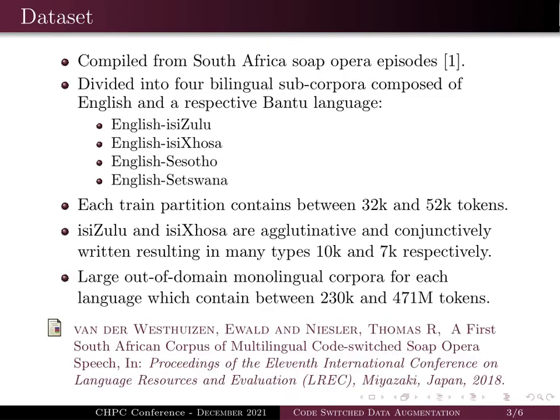In addition to this, we have large out-of-domain monolingual corpora for each language and English, which contain between 230,000 and 471 million tokens.